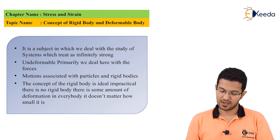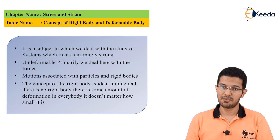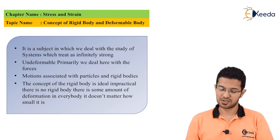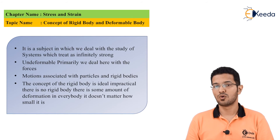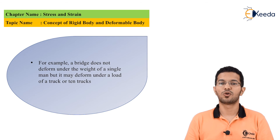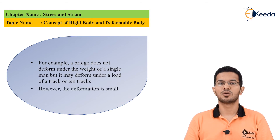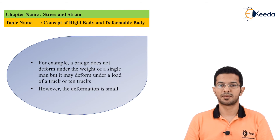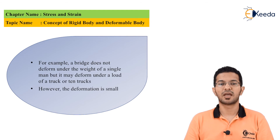The concept of a rigid body is ideally impractical. There is no truly rigid body; there is some amount of deformation in every body, no matter how small it is. For example, a bridge does not deform under the weight of a single man, but it may deform under the load of a truck or 10 trucks, however small the deformation may be. Since there is no perfectly rigid body in practicality, we must introduce another concept — the concept of a deformable body — so that we can use it in engineering problems.